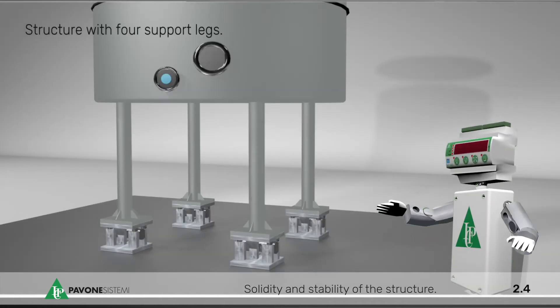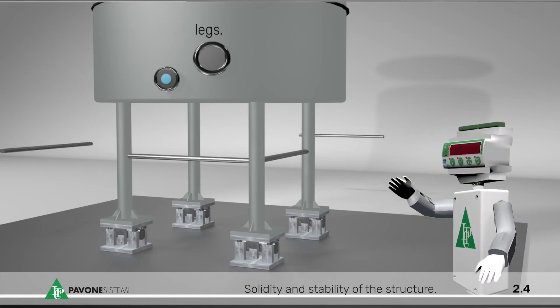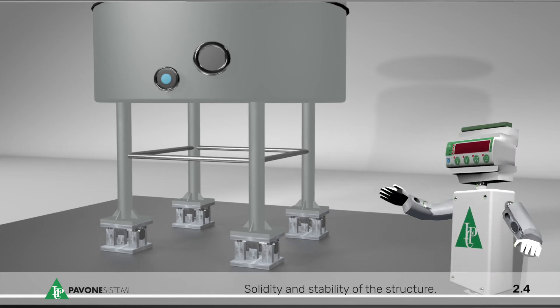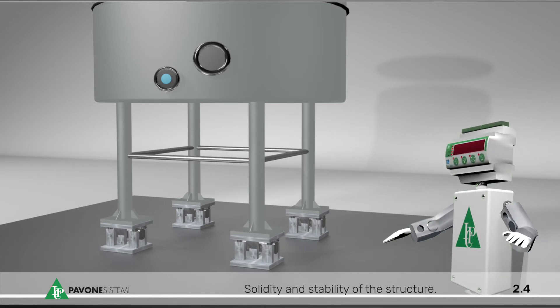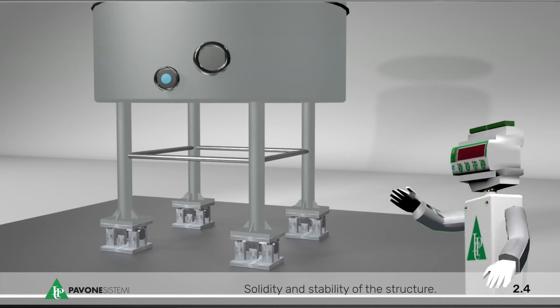Structure with 4 support legs. Also, when 4 support legs are present in the weighing system, they must necessarily be anchored in a correct way, so that solidity and stability as well as correct weighing may be assured.